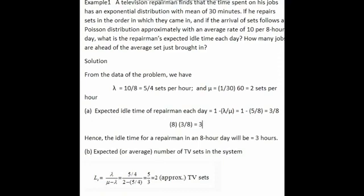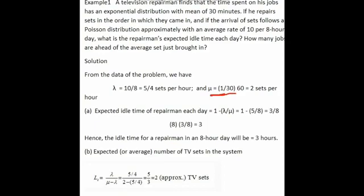The exponential distribution with mean of 30 minutes means the service rate follows an exponential distribution with an average of 30 minutes. Service rate is denoted by the symbol mu. So mu is equal to 1 by 30 minutes. Since 1 hour has 60 minutes, mu equals 1 by 30 into 60, which gives 2 sets per hour.